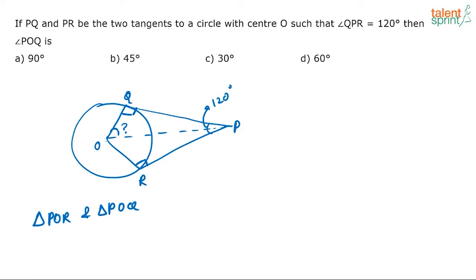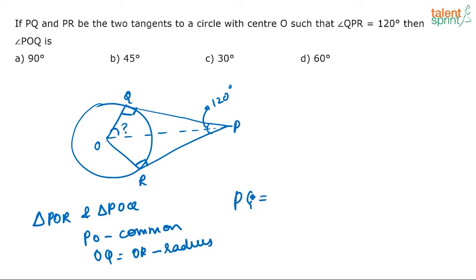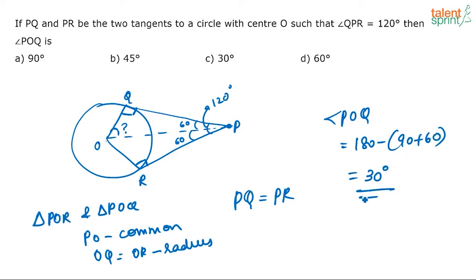All three sides of the two triangles are the same: PO is common to both triangles, OQ equals OR because both are radii, and PQ equals PR because these are tangents drawn from the same external point. Since the triangles are congruent, their angles are also equal. The full angle QPR is 120 degrees, so each half is 60 degrees. Therefore, angle POQ equals 180 minus (90 plus 60) equals 30 degrees — option C.